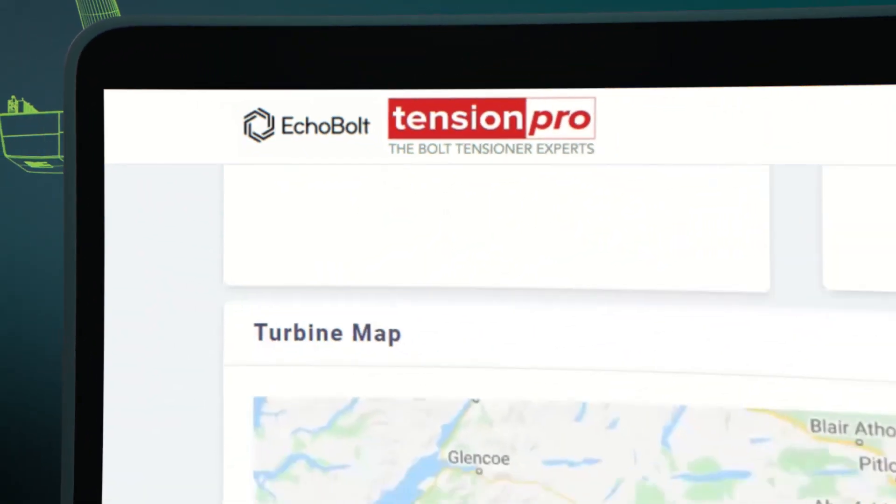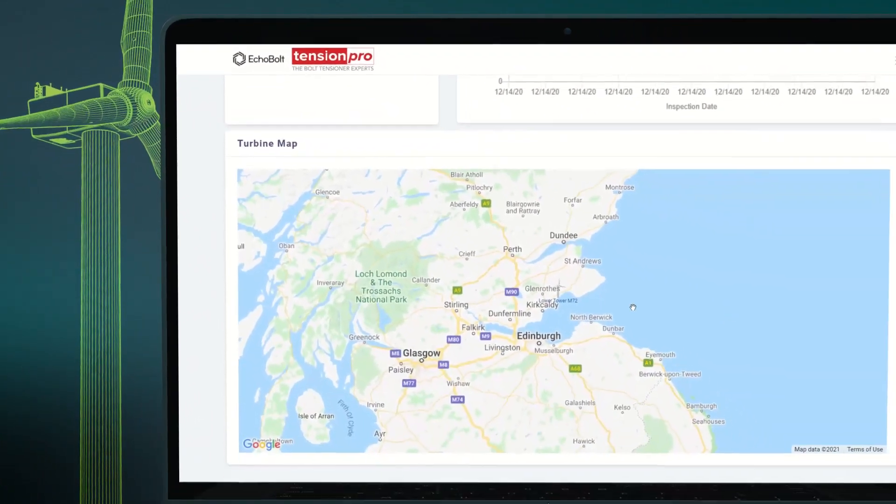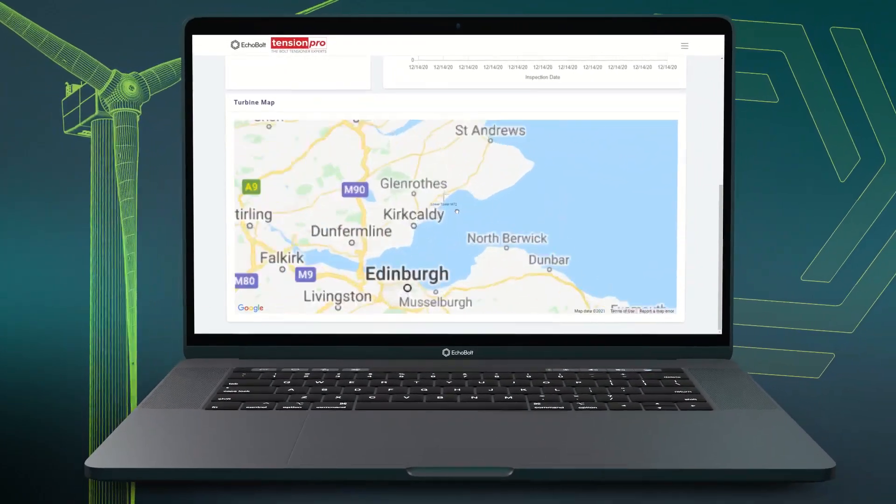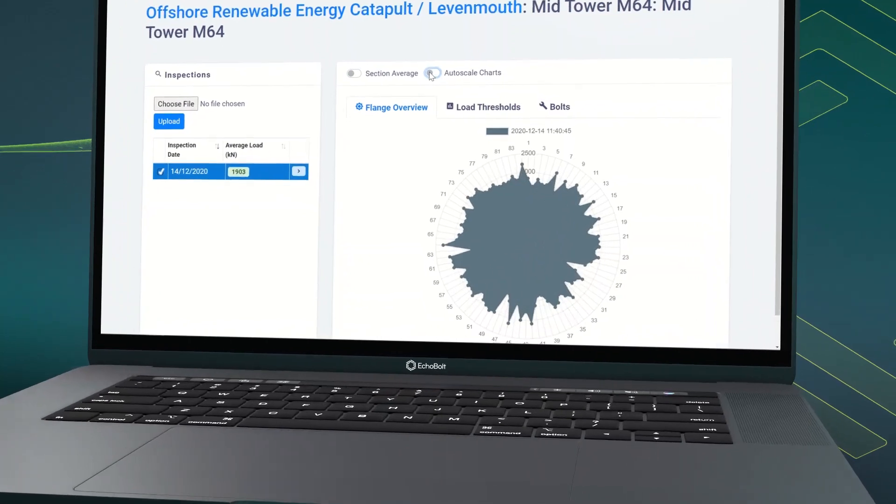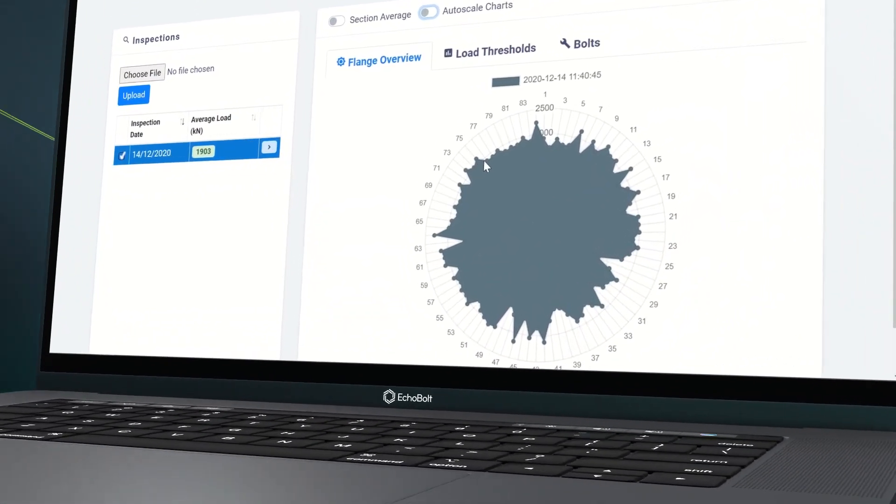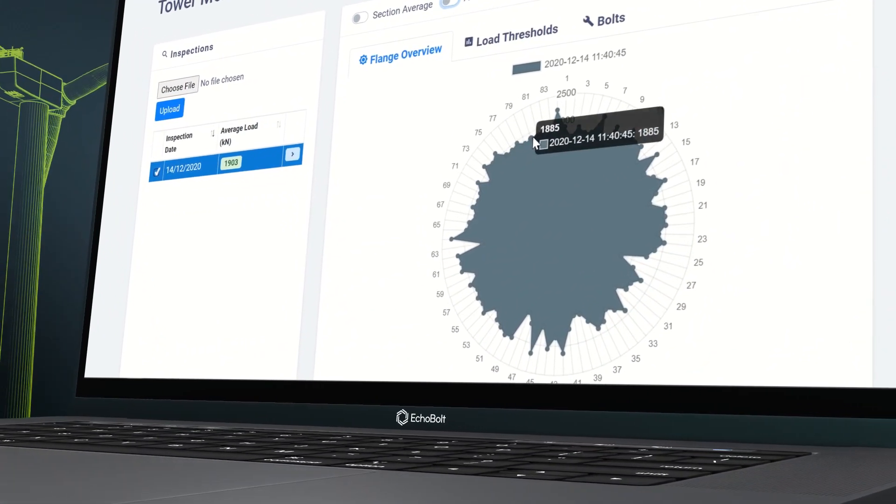Additionally, the data analyzed through Echobolt's Bolt Watch software allows instant visibility of changes in bolt load, trending of asset condition, and accurate forecasting of any future loss of tension.